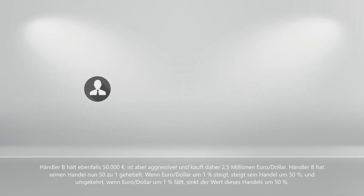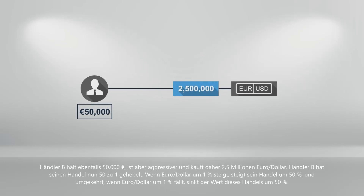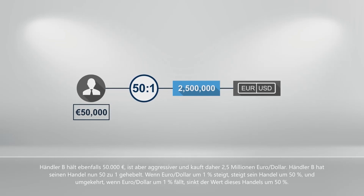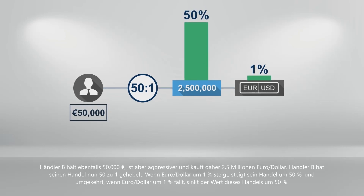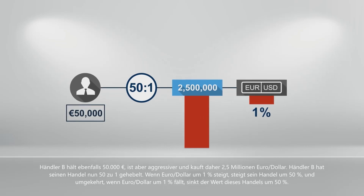Trader B also holds 50,000 euros, but is more aggressive and therefore buys 2.5 million euro-dollar. Trader B has now leveraged his trade 50 to 1. If euro-dollar goes up 1%, his trade will go up 50%. And conversely, if euro-dollar goes down 1%, the net worth of his trade is down by 50%.